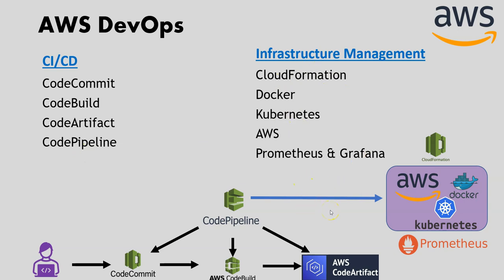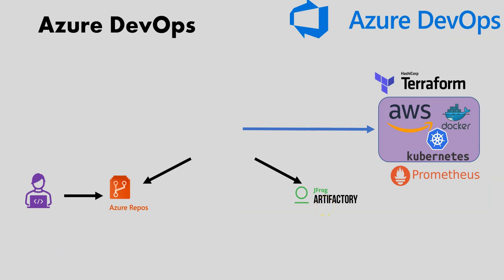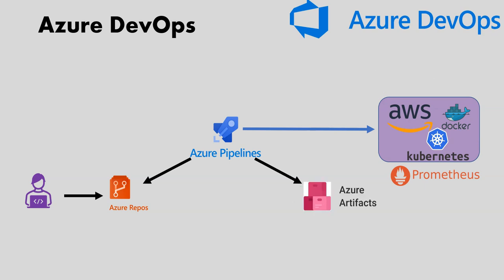If you want to set up the same thing in Azure DevOps: for GitHub we have Azure Repos, for Jenkins and Maven we have Azure Pipelines, for Artifactory we have Azure Artifacts, and for Terraform we have Azure Resource Manager. Of course, we are using Azure as the cloud environment. Docker and Kubernetes are still required for containerization and management, and for monitoring, Azure DevOps tools can be used, though Prometheus also works.